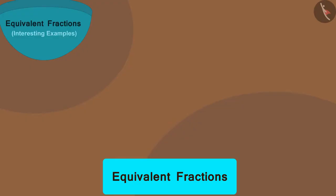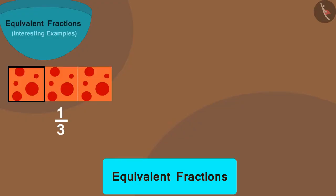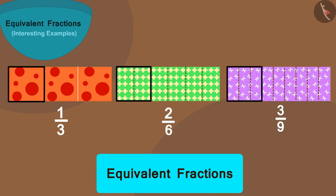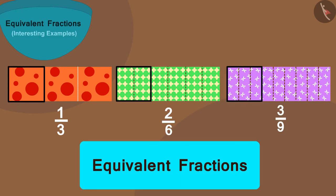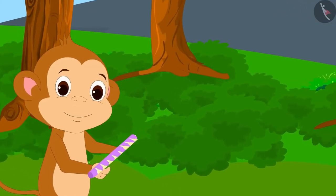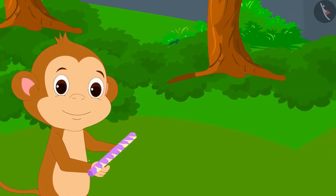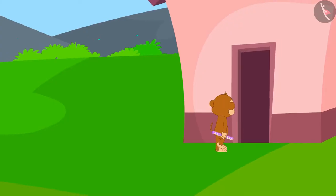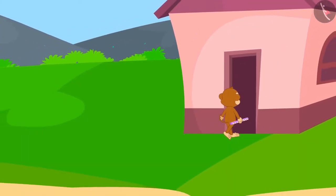In this way, one third is equal to two sixths is equal to three ninths. All these are equivalent fractions. Babban took three ninths of Chanda's cloth and happily returned home.